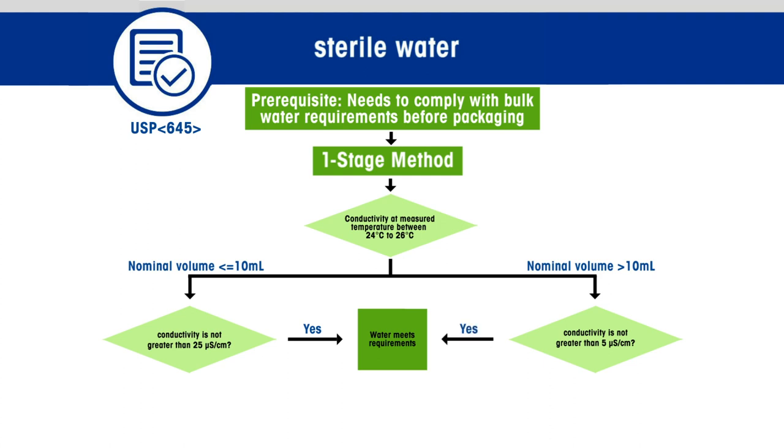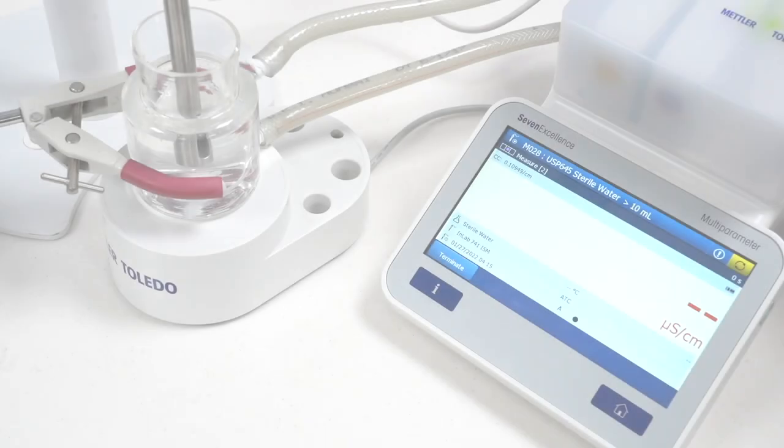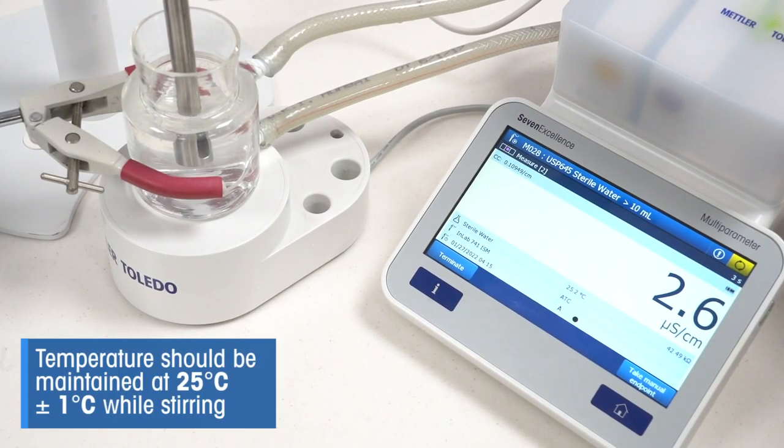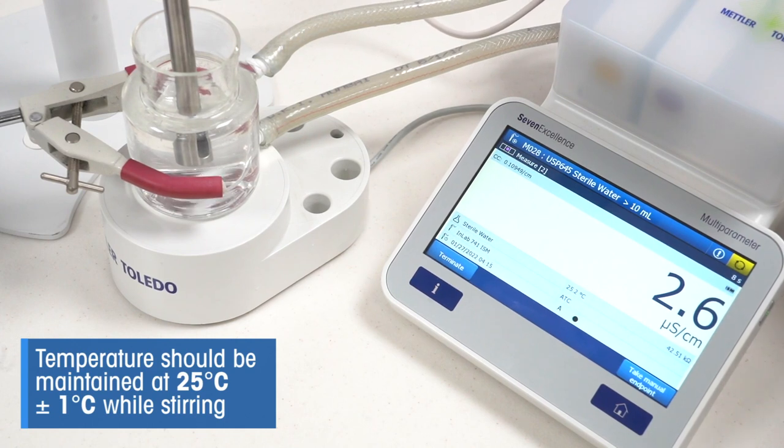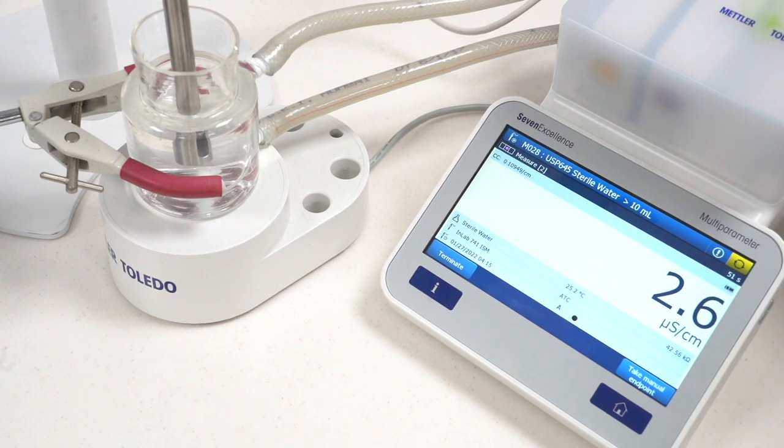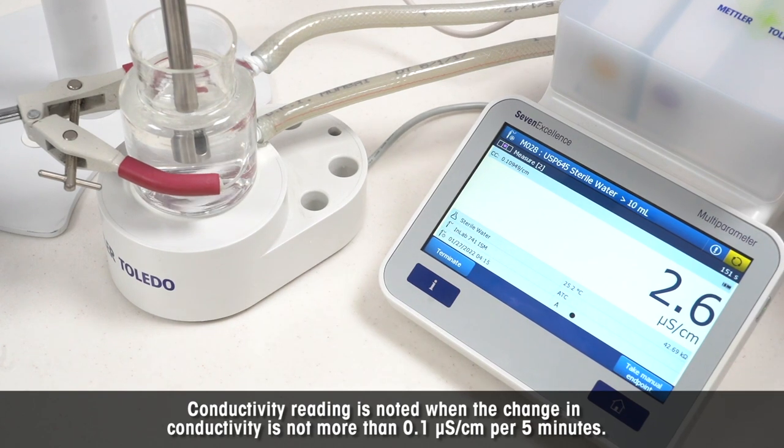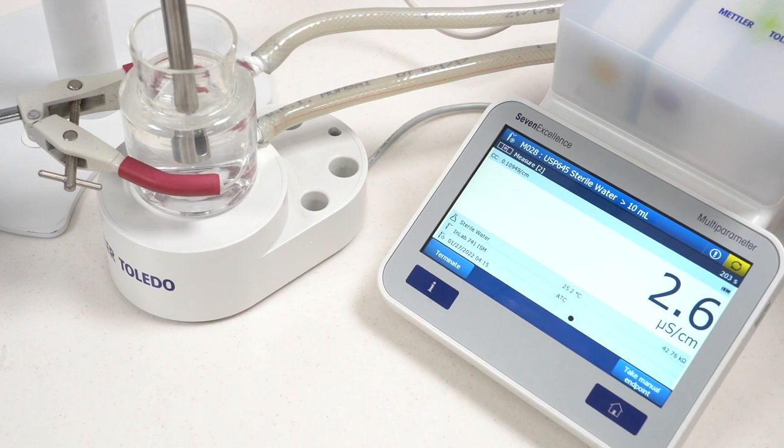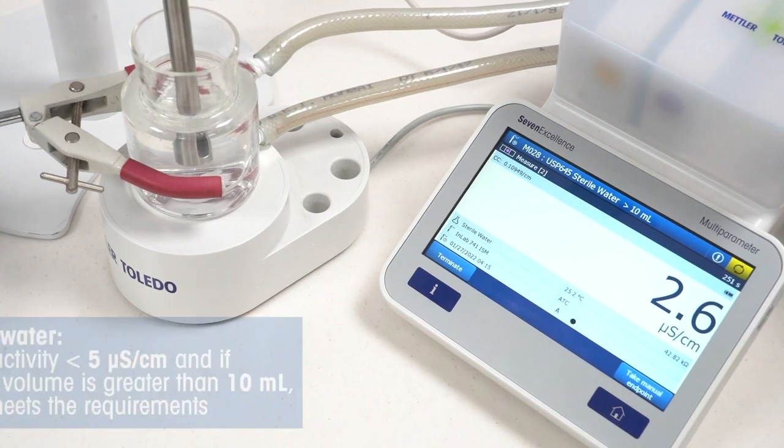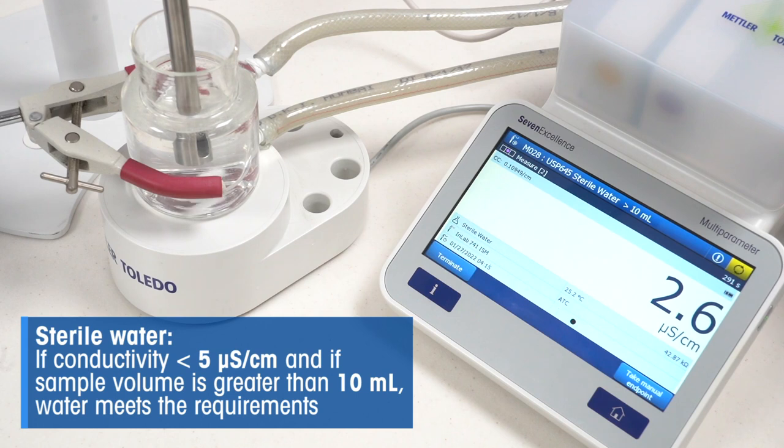Let us make an example. Here, we use the thermostat to maintain the temperature at the required 25 degrees Celsius. The water sample is stirred to generate carbon dioxide equilibrium, and the conductivity checked. When it does not change for more than 0.1 microsiemens per centimeter per 5 minutes, it is noted down. In our case, the sample volume is greater than 10 milliliters, and the conductivity is less than 5 microsiemens per centimeter. The water meets the requirements.